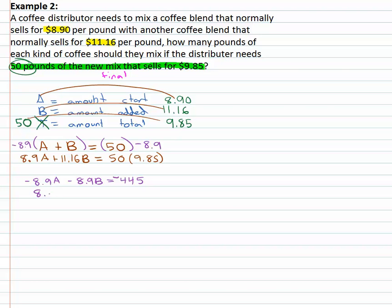Second equation still eight point nine A plus eleven point sixteen B equals whatever fifty times nine point eight five is, which is four ninety two point five.